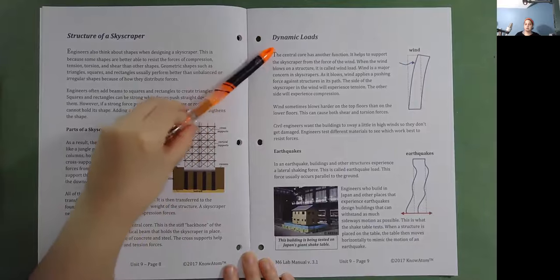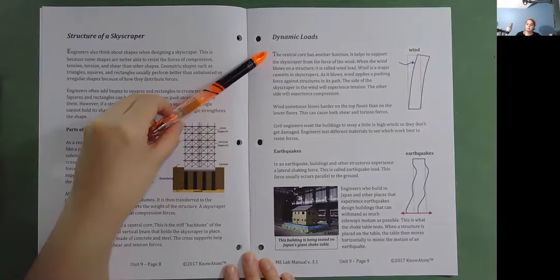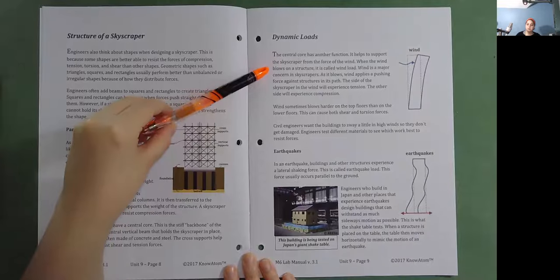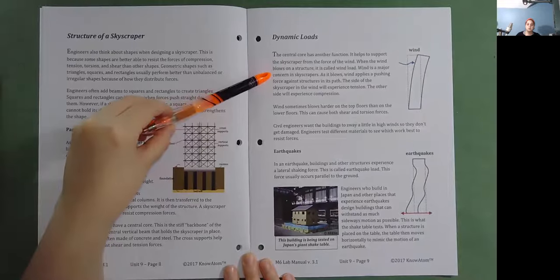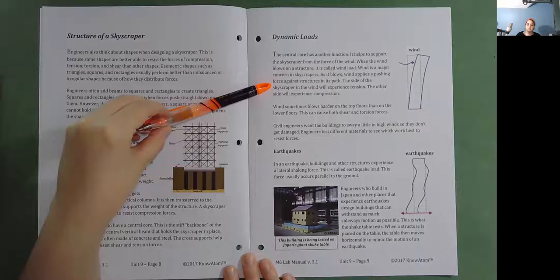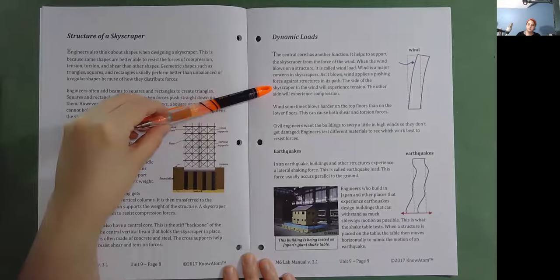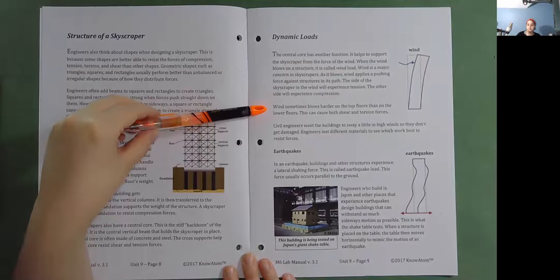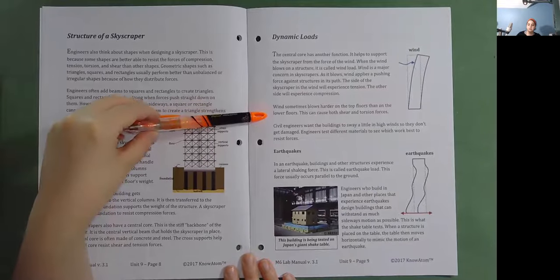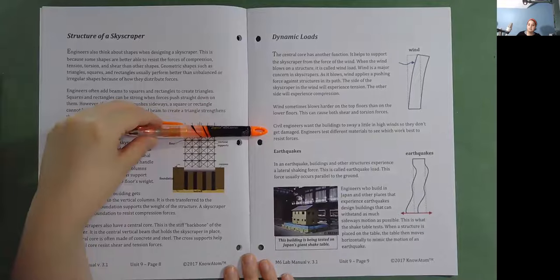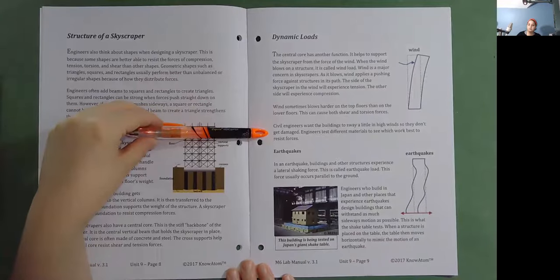Dynamic loads. The central core has another function. It helps to support the skyscraper from the force of the wind. When the wind blows on a structure, it is called wind load. Wind is a major concern in skyscrapers. As it blows, wind applies a pushing force against structures in its path. The side of the skyscraper in the wind will experience tension. The other side will experience compression. Wind sometimes blows harder on the top floors than on the lower floors. This can cause both shear and torsion forces. Civil engineers want the buildings to sway a little in high winds so they don't get damaged. Engineers test different materials to see which works best to resist forces.